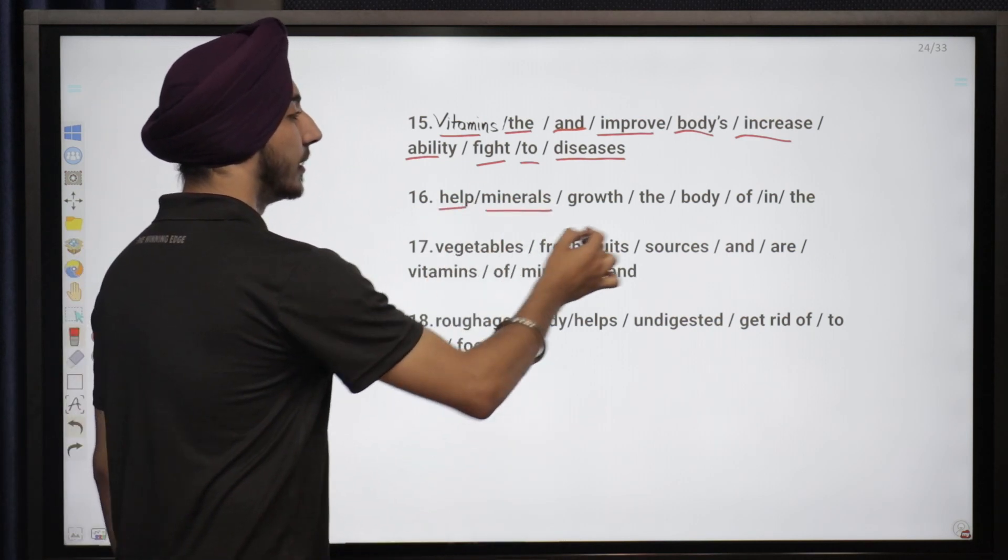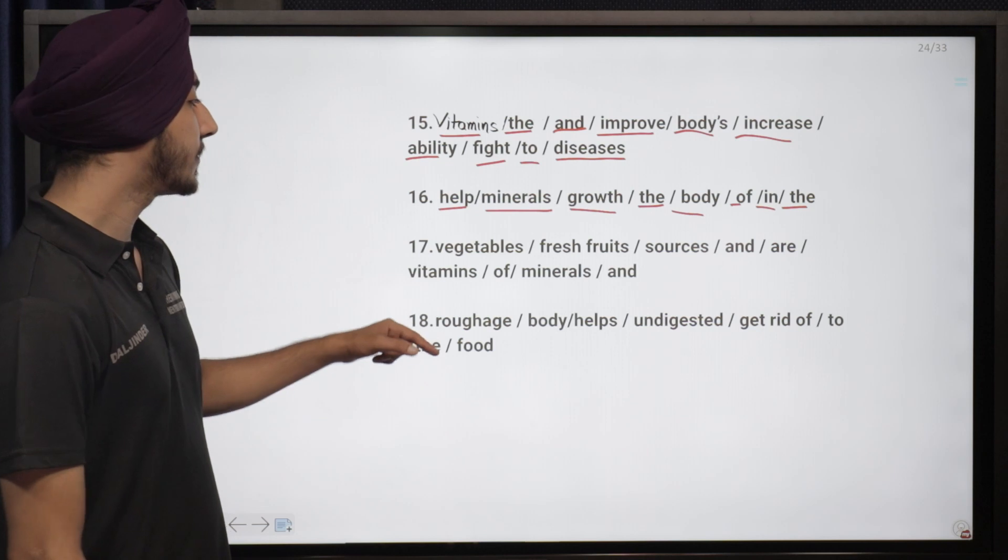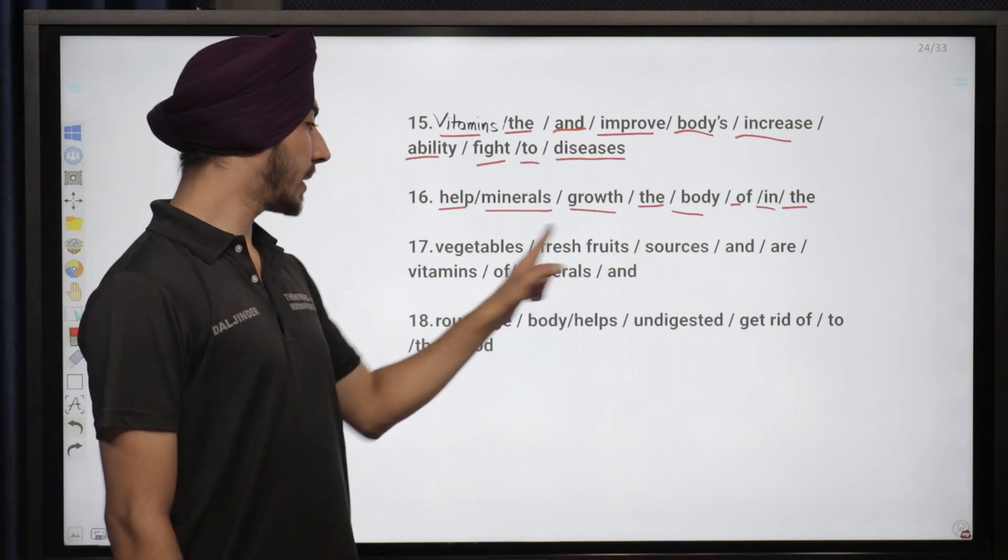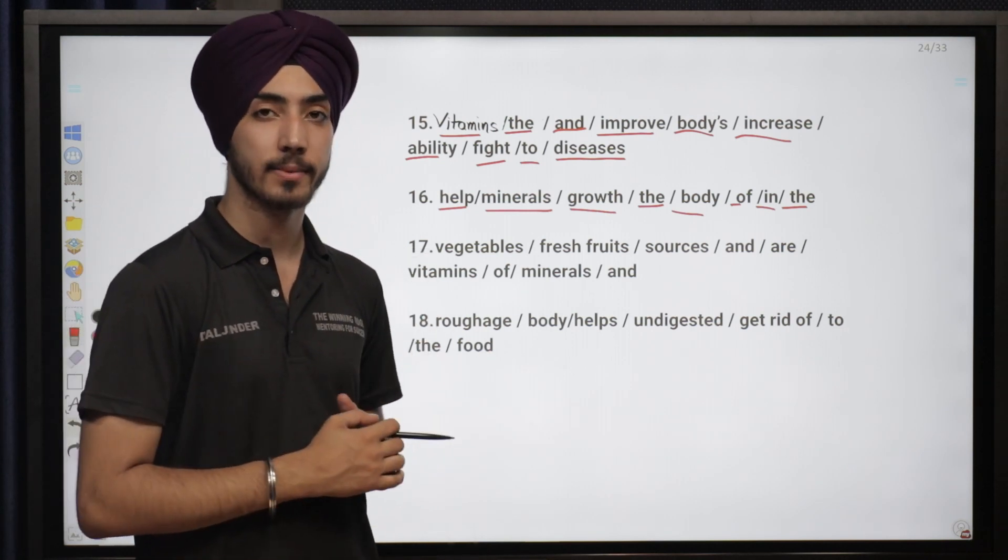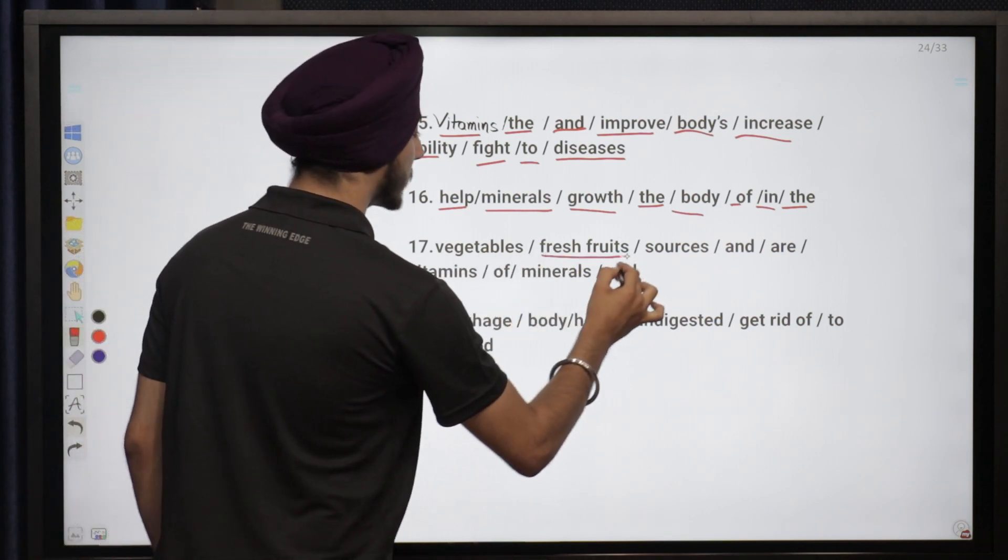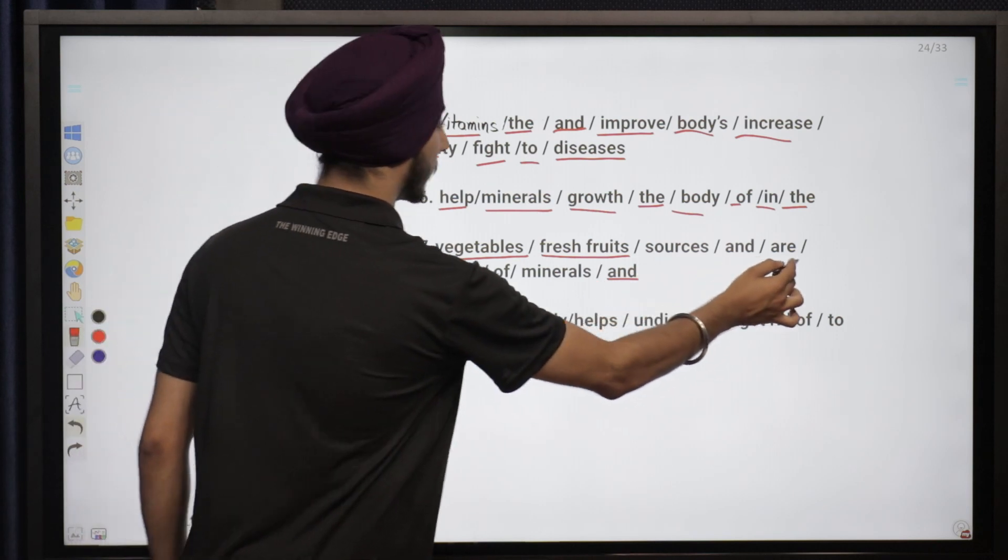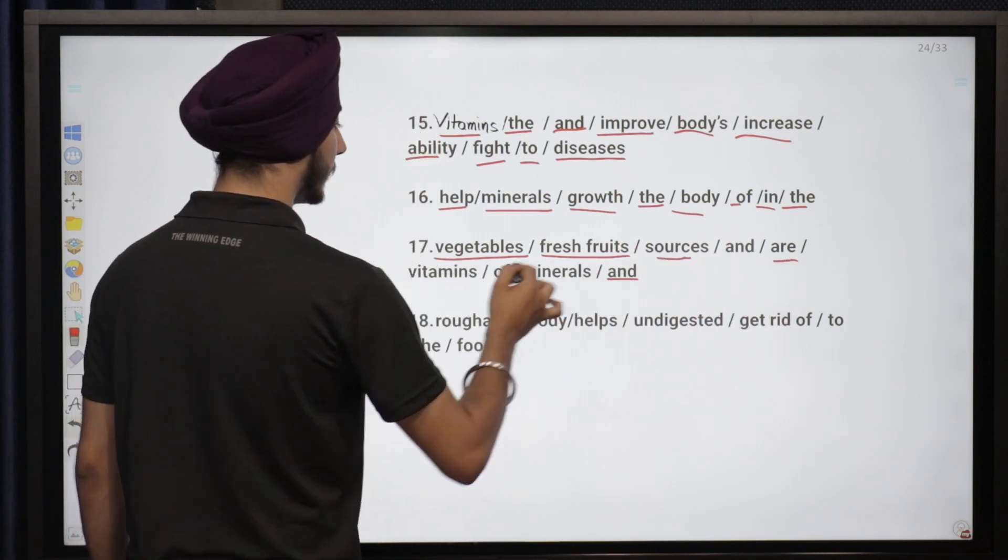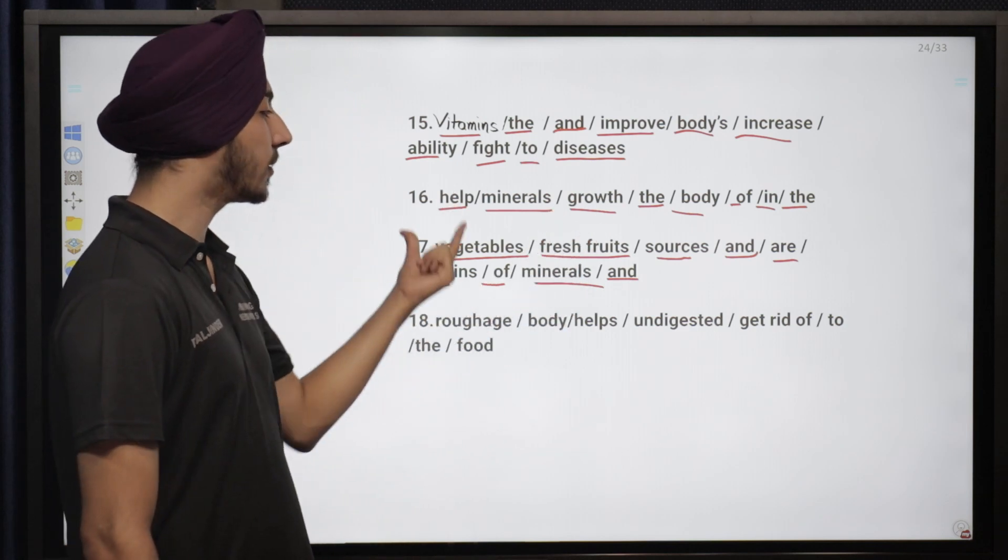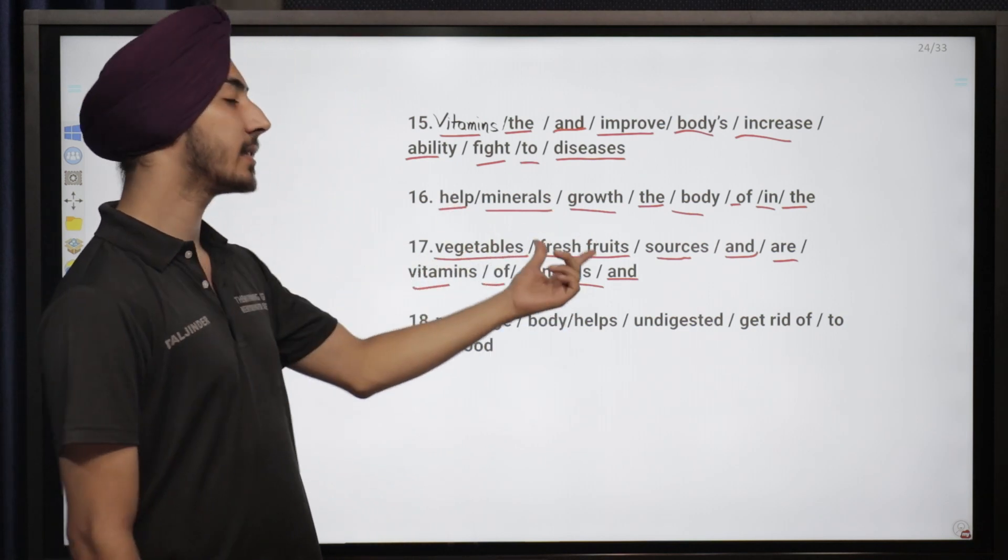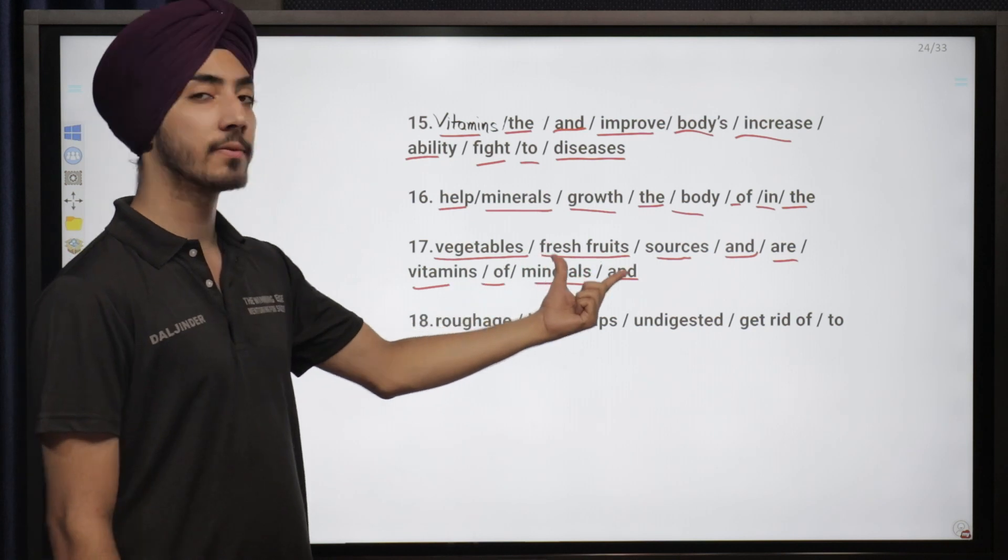Number 17: vegetables fresh fruits sources and are vitamins of minerals and. So what can we say? Fresh fruits and vegetables are sources of vitamins and minerals. If you use fresh fruits before, that gives you an impression that we're talking about fresh fruits or fresh vegetables. But if you start with vegetables and fresh foods, that gives you an idea we're only talking about fresh foods. Vegetables can be old, so that way you should use fresh fruits in the beginning.